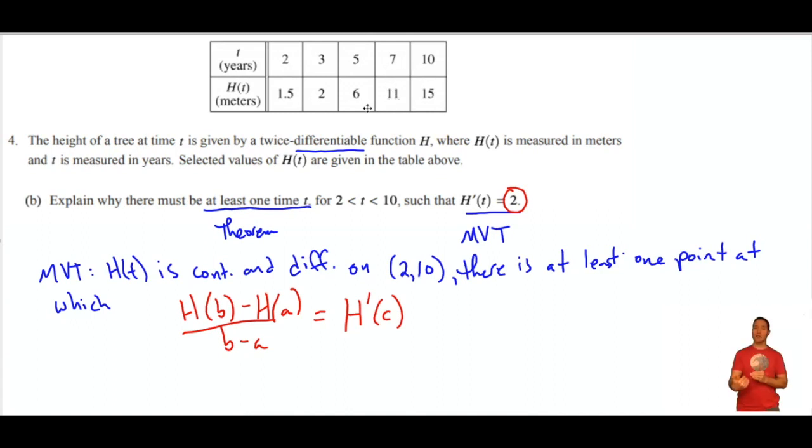So what I need to do is find out where is the average rate of change equal to 2. So if I just look through this table and I do in my head change in y over change in x. Ah, there it is. 6 minus 2 divided by 5 minus 3. That comes out to 4 halves, better known as 2. So because the average rate of change between 3 and 5 is 2,